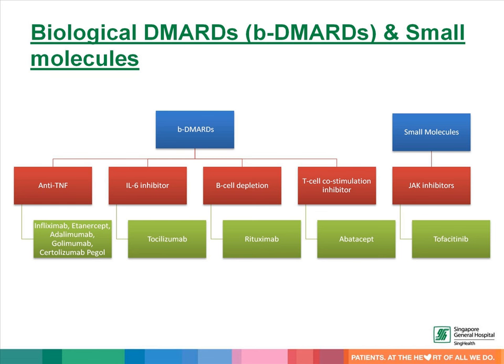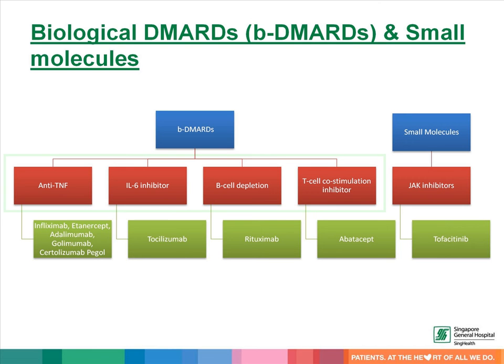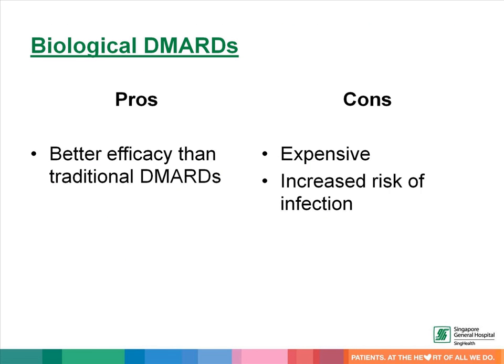If conventional synthetic DMARDs fail to control disease activity in rheumatoid arthritis, we can consider using biologics. Biologics can be classified into anti-TNF therapy, interleukin-6 inhibitors, B-cell depletion therapy, and T-cell co-stimulation inhibitors. Most recently, we can also use JAK inhibitors to treat rheumatoid arthritis. The more advanced biologic therapies have better efficacy than traditional medication, though their use is limited by cost and increased risk of infection.